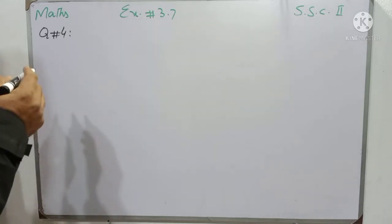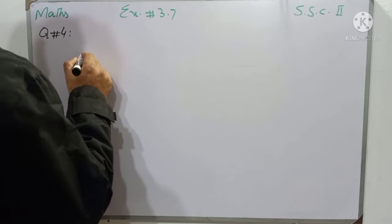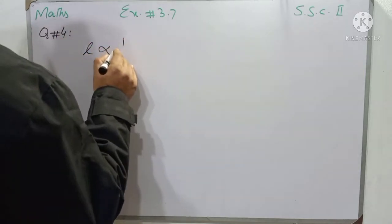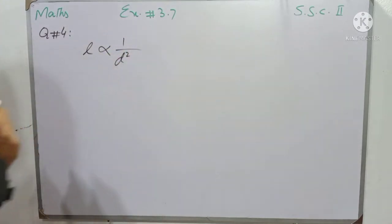Students, given information: the intensity of light L, which is represented as L, varies inversely as the square of the distance D.